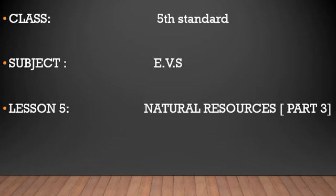Lesson 5, Natural Resources, Part 3. In Part 1 and Part 2 of this lesson, we learned about what are the different natural resources and the two types: renewable resources and non-renewable resources. Renewable resources include solar energy, air, water, soil, forest, etc. Non-renewable resources include coal, iron, petrol, diesel, and similar examples.